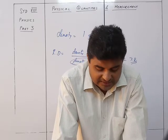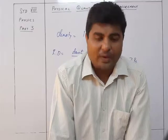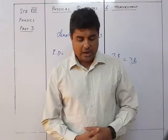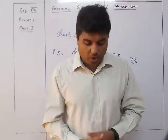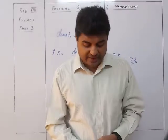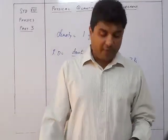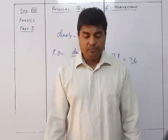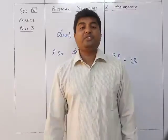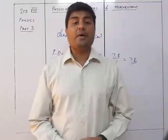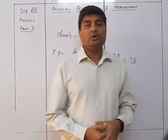The density of a substance is the mass of 1 centimeter cube of that substance. Therefore we can also express relative density as: mass of 1 centimeter cube of substance upon mass of 1 centimeter cube of water, which equals mass of any volume V of substance upon mass of the same volume V of water. So relative density can also be defined as the ratio of mass of any volume of substance to the mass of equal volume of water.